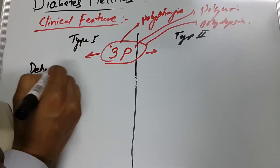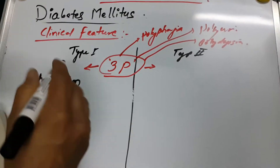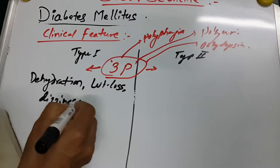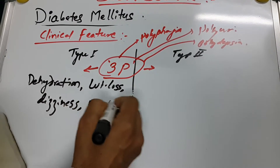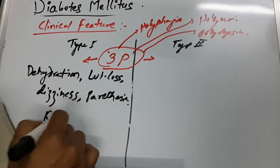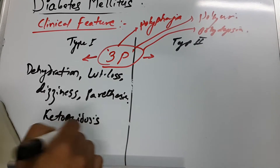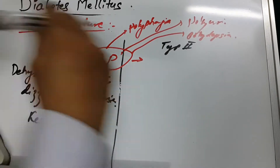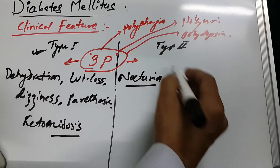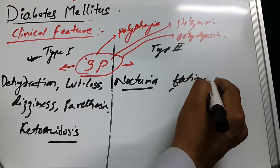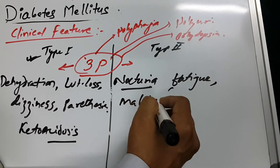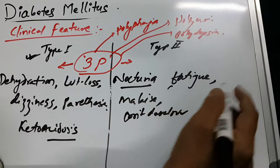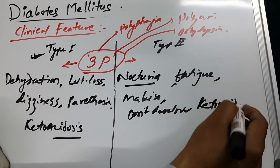In Type 1, you can see more dehydration in patients, along with weight loss, dizziness, and paresthesia. Ketoacidosis may also be present in Type 1. But in Type 2, we see the 3P plus nocturia, fatigue, and malaise. Most importantly, Type 2 patients never develop ketoacidosis — you need to remember this.